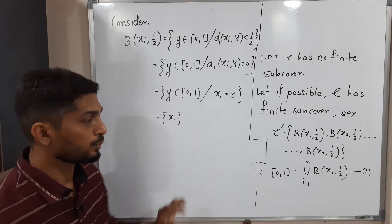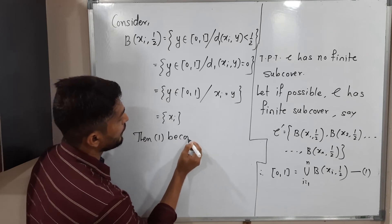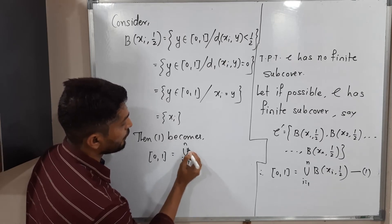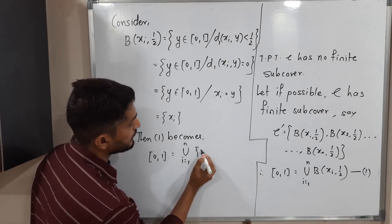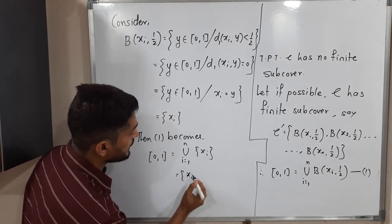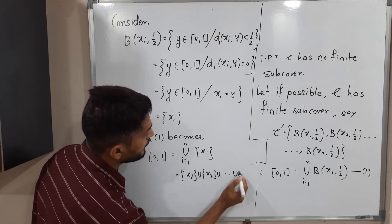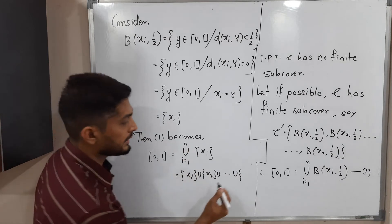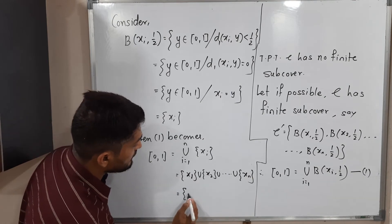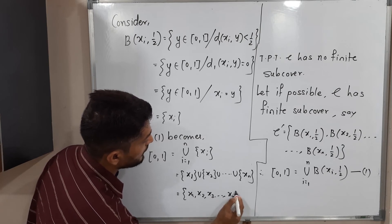So the value of the ball B(xi, 1/2) is simply {xi}. Using this in equation 1, we get: [0,1] = union from i=1 to n of {xi} = {x1} ∪ {x2} ∪ ... ∪ {xn}, which gives us [0,1] = {x1, x2, ..., xn}.